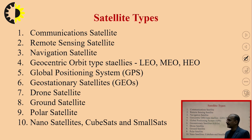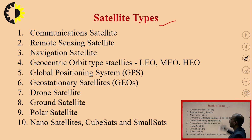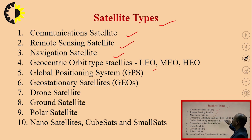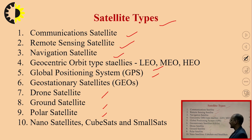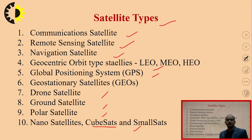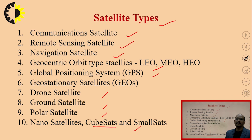These are the various types of satellites. Other types of satellites are also possible: communication satellite, remote sensing satellite, navigation satellite, geocentric orbital type satellite, global positioning satellite, drone satellite, ground satellite, polar satellite, nanosatellite, and CubeSat as discussed earlier. In the next lecture, we are going towards the satellite services that come from the various types of satellites. Thank you.